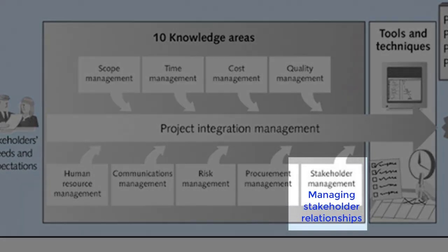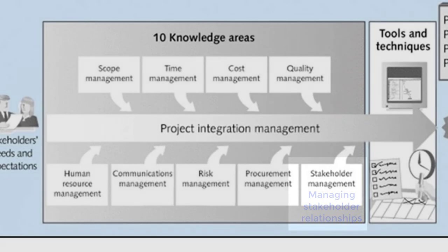Stakeholders are individuals and groups who impact your project and those that you also influence. For example, stakeholders on the renovation project would include the homeowner, the builder or contractor, suppliers, and tradespeople. Sometimes stakeholders can be external too, like the local government or council.